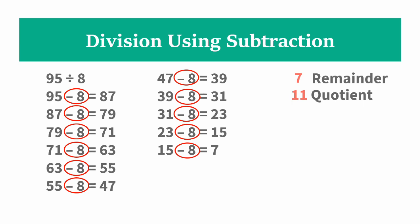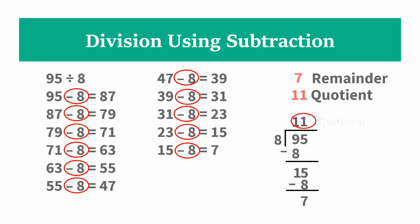So 95 divided by 8 is quotient 11, remainder 7. We can review using short division: 9 divided by 8 is 1, 1 times 8 is 8, 9 minus 8 is 1, bring down 5 to get 15. 15 divided by 8 is 1, 1 times 8 is 8, 15 minus 8 is 7. So the quotient is 11 and the remainder is 7.